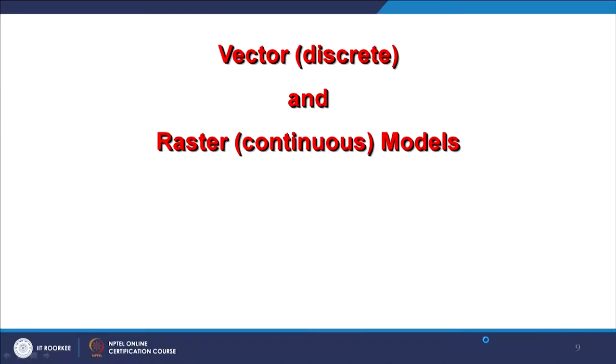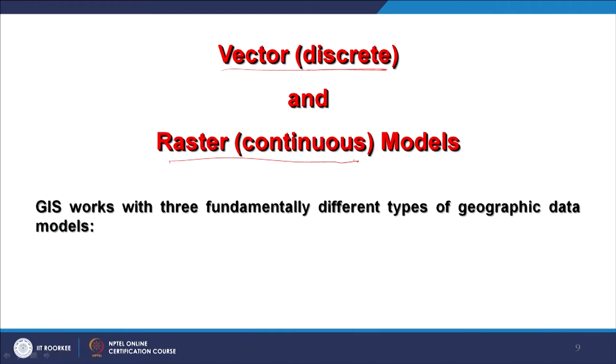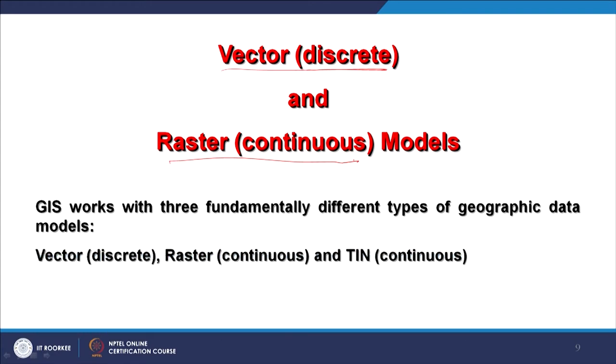Now we will have a dedicated discussion comparing vector and raster data — how they differ, and their advantages and disadvantages. We have already discussed that vector is discrete data whereas raster is a continuous data model — that is one major difference. Good GIS software is capable of handling vector, raster, TIN, and non-spatial data. Currently we are focused on vector versus raster.